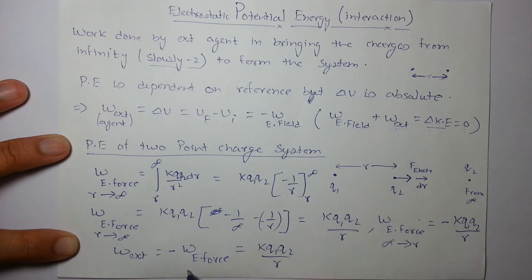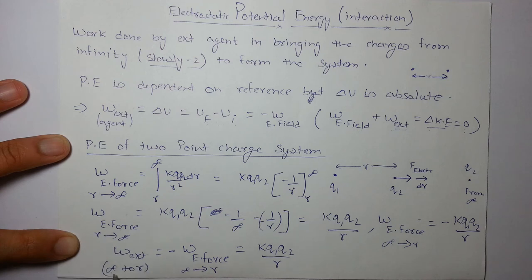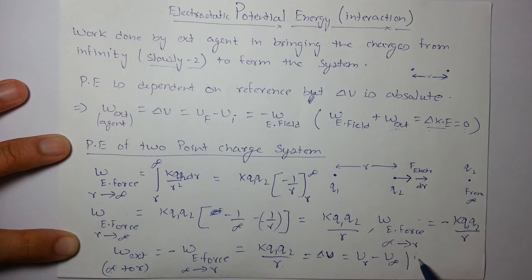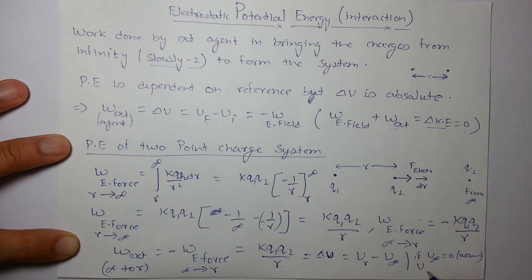The work done by the external agent is minus of the work done by the electric force, so that gives kQ1Q2/r — this is the work from infinity to r. This equals the change in potential energy, delta U, which is U(r) minus U(infinity). If we assume U at infinity equals zero, then U(r) is simply kQ1Q2/r. That is the formula we will use for further calculations.